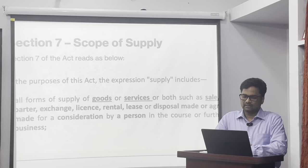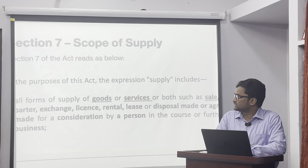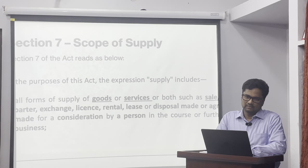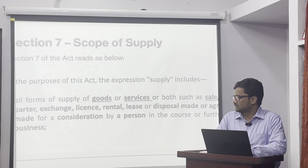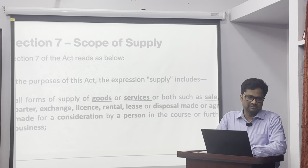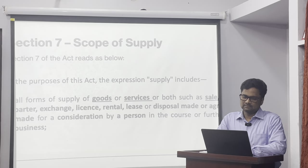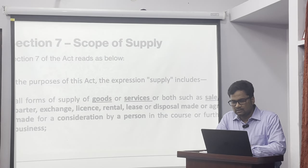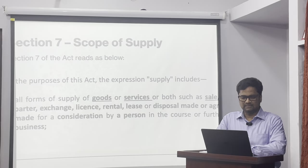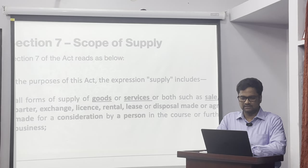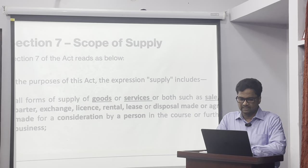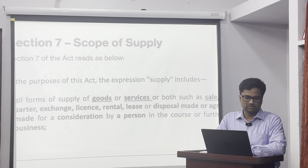Section 7, subsection 1, clause A says supply includes all forms of supply of goods or services such as sale, barter, transfer, exchange, license, rental, lease, disposal — made or agreed to be made for a consideration by one person to another person in the course or furtherance of business.